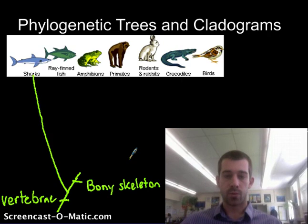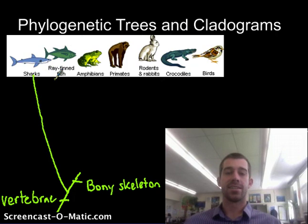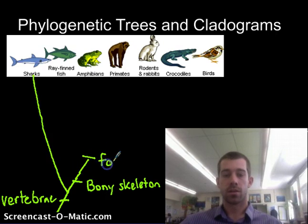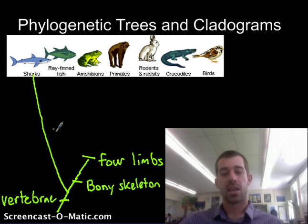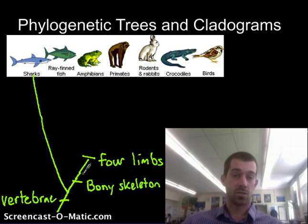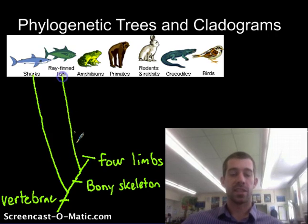The next thing we're going to look at is finding another organism out of this group that is lacking a trait that all of the other ones have. That next trait to evolve is four limbs. We call these organisms tetrapods, which means four feet. All of these guys have four limbs, but the ray-finned fish doesn't. So their ancestors must have broken away from the rest of the group after developing bony skeletons, but before developing four limbs.